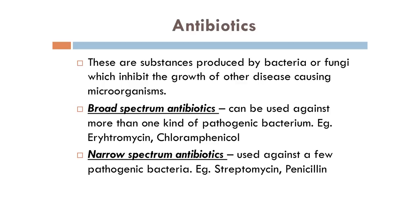The next application is in the preparation of antibiotics. Antibiotics are substances which are produced by bacteria or fungi which inhibit the growth of other disease-causing microorganisms. These antibiotics are produced from friendly bacteria or fungi and they work against the disease-causing pathogens. We can classify antibiotics as broad spectrum antibiotics and narrow spectrum antibiotics. Broad spectrum antibiotics can be used against more than one kind of pathogenic bacteria, for example erythromycin and chloramphenicol, and narrow spectrum antibiotics are used against a few pathogenic bacteria, for example streptomycin and penicillin.